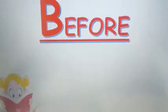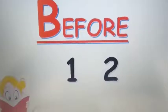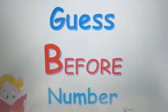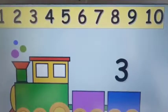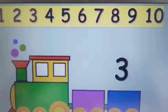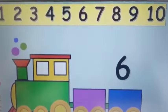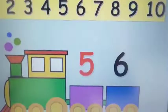So first let us look at the concept of before. Can you tell me which number comes before two? One — very good, so one comes before two. Now you can see the number line on the top from one to ten. Can you guess the number before three? Two — very good, two comes before three. Now guess the number that comes before six. Five — correct! So five comes before six.